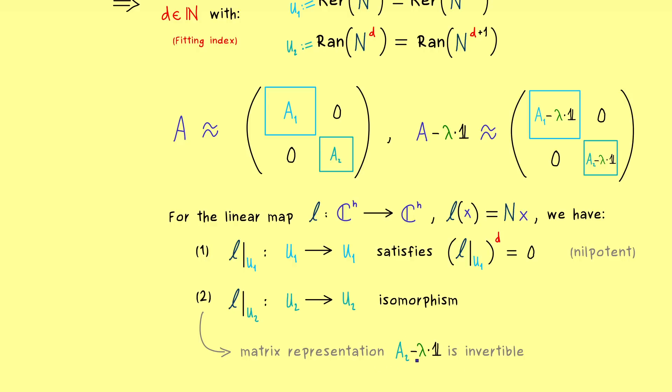Therefore, by definition, the complex number lambda cannot be an eigenvalue of A2. This is an important conclusion, because it immediately tells us that the eigenvalue lambda is not found in the second block matrix of A.